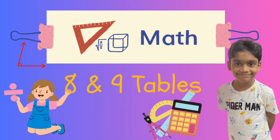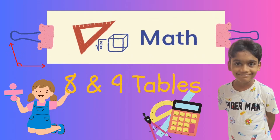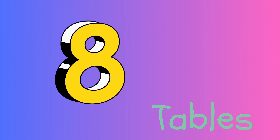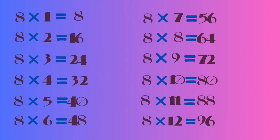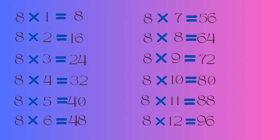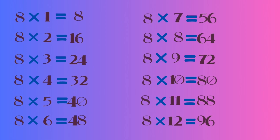Hey guys, welcome to my channel! Today we're gonna learn the 8 and 9 tables together. Let's get started. 8 tables: 8 ones are 8, 8 twos are 16, 8 threes are 24, 8 fours are 32.